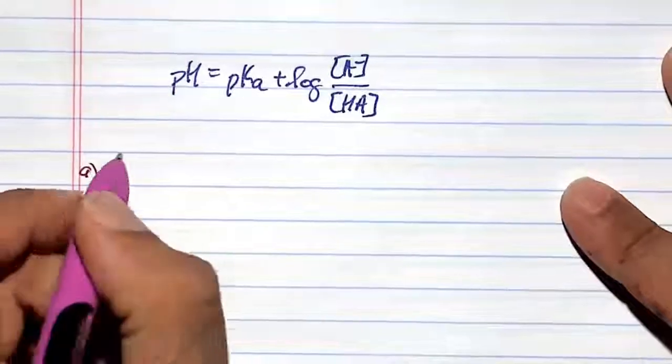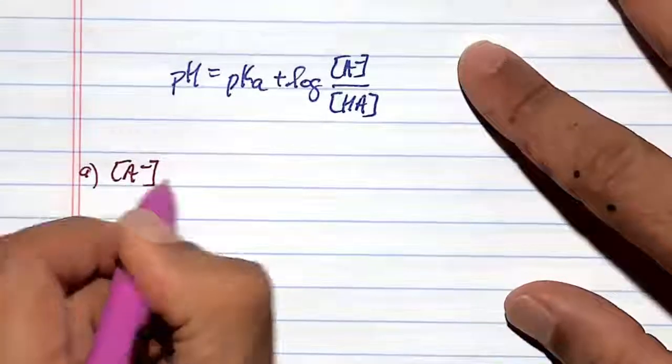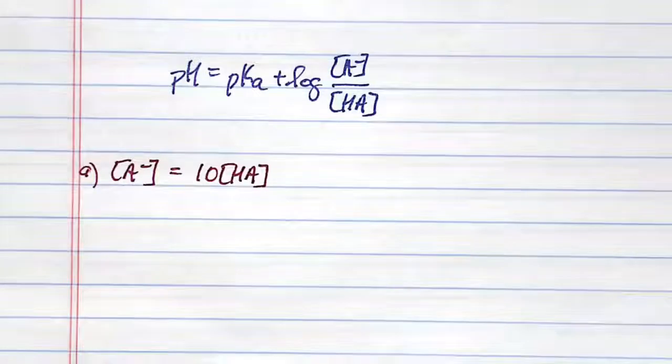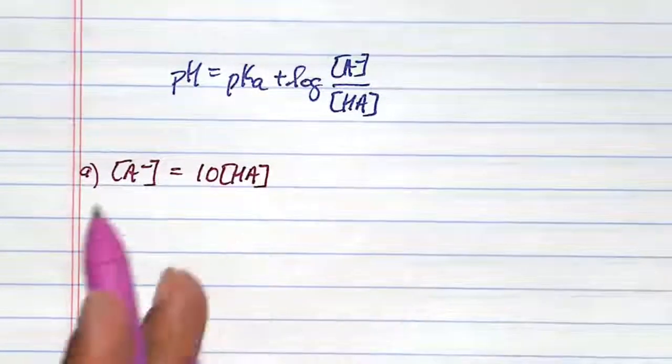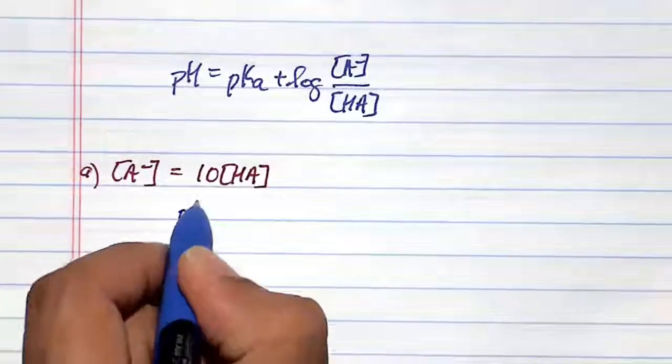In the first situation, the concentration of the conjugate base is equal to 10 times the concentration of the acid. By plugging that in, this is just simply a plug-and-chug situation. So I'll have pH.